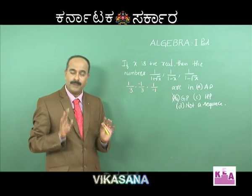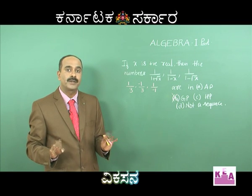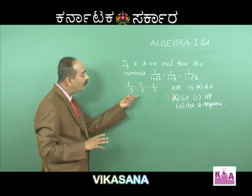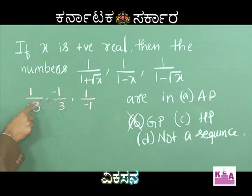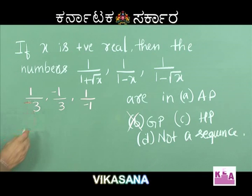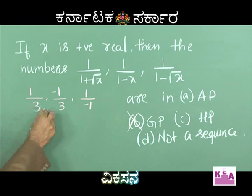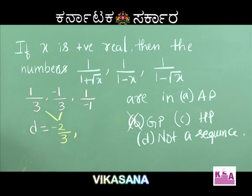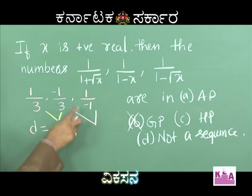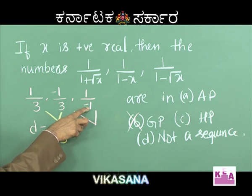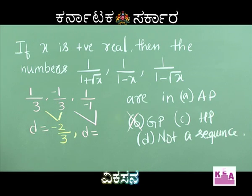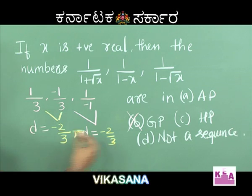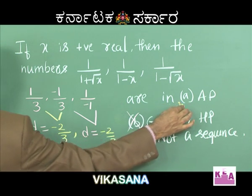The ratio of successive terms: second to first is negative, third to second is positive — so it is not a GP. Now checking AP: the common difference D between first two terms is minus 1/3 minus 1/3 equals minus 2/3. The third term minus the second term is minus 1 plus 1/3, which also gives minus 2/3. Common difference is the same, so without hesitation we can say these terms are in arithmetic progression — AP.